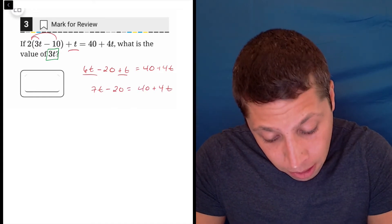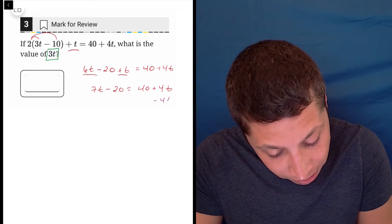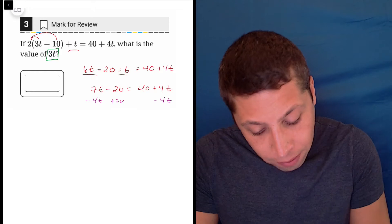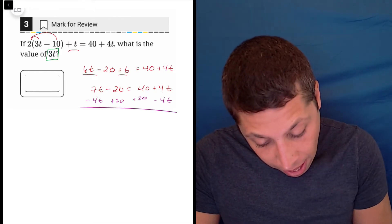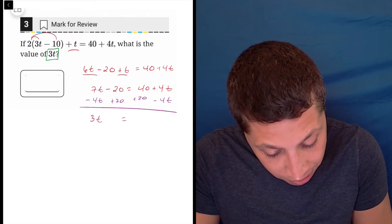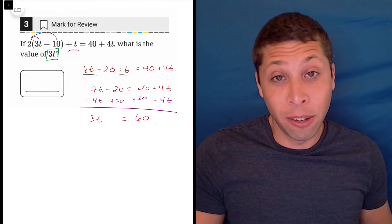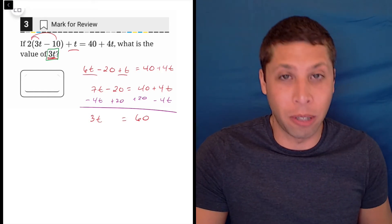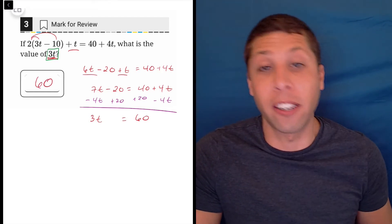And on my scrap paper, I don't trust myself to do this stuff in my head. So I'm going to even write these extra steps, move the 4t, add the 20, and we get that 3t is equal to 60. Now, if you're paying attention, you might just be like, oh, I'm just done, right? Because that's what I wanted is 3t. So yeah, you could just be done here and that is the answer.